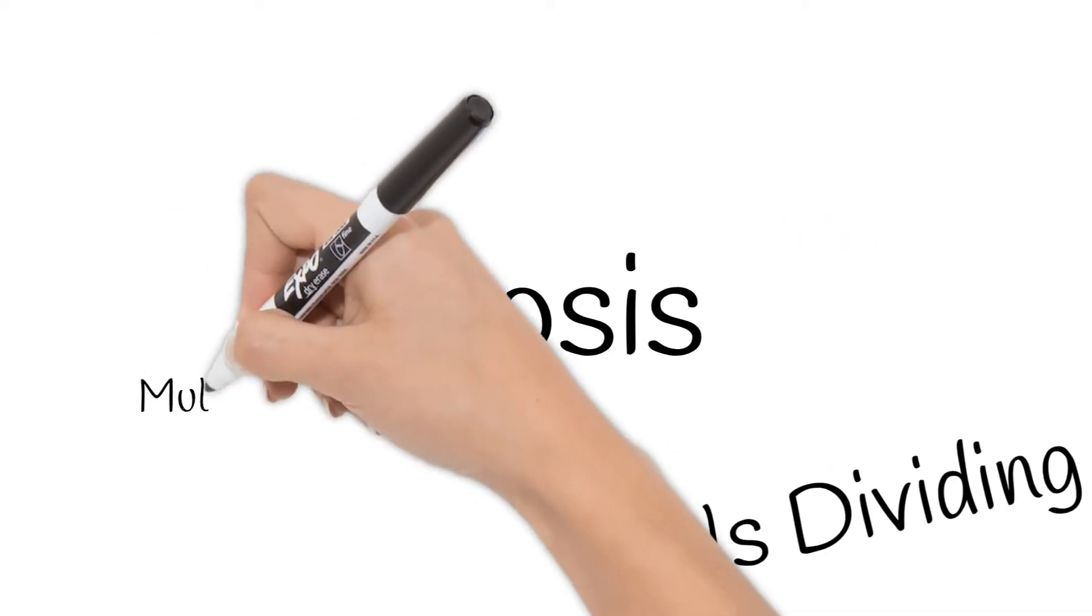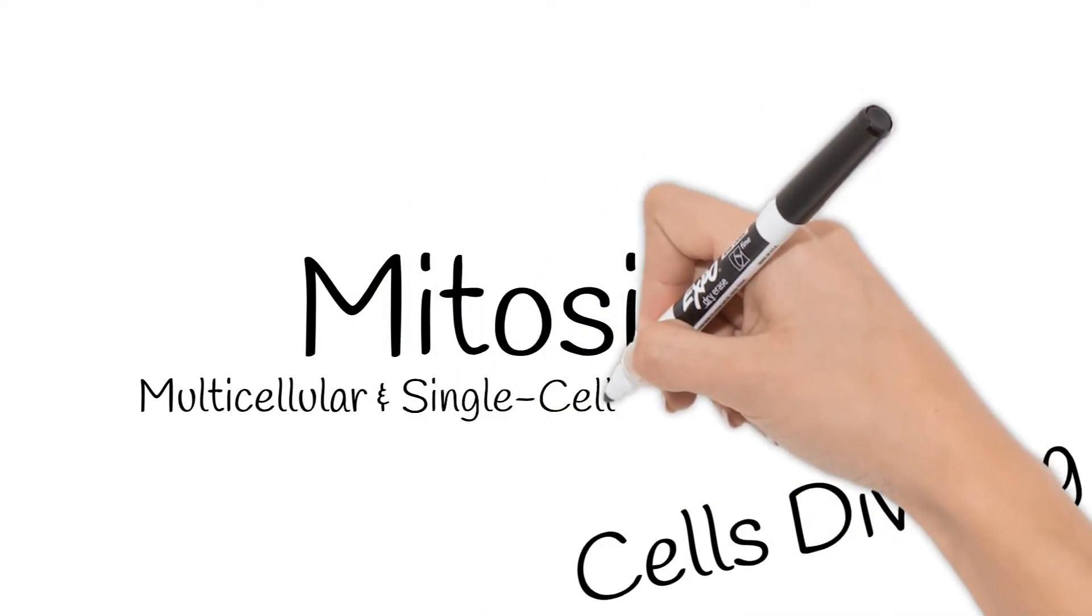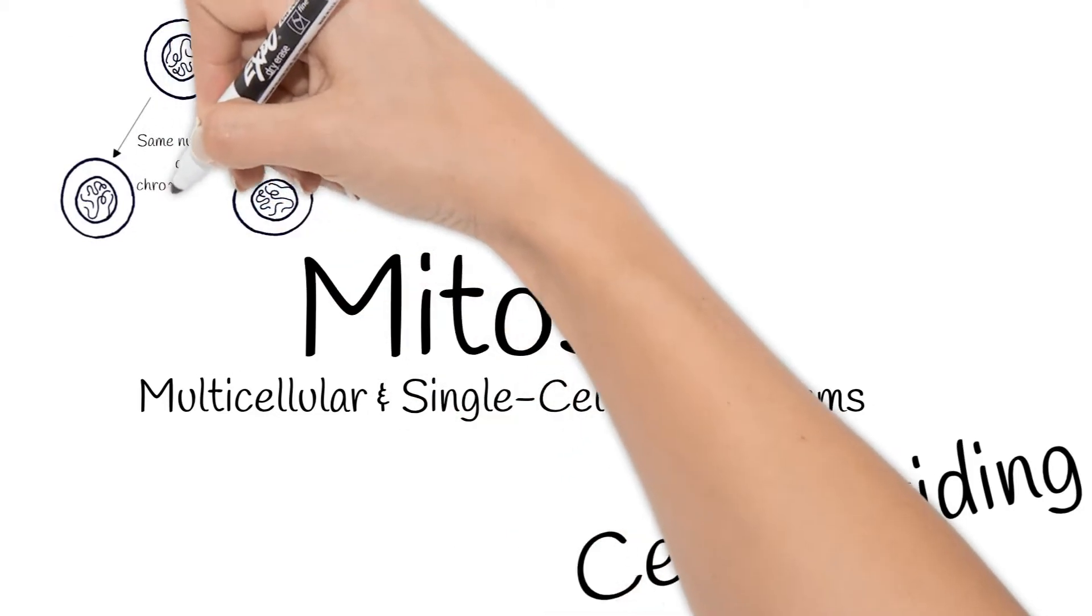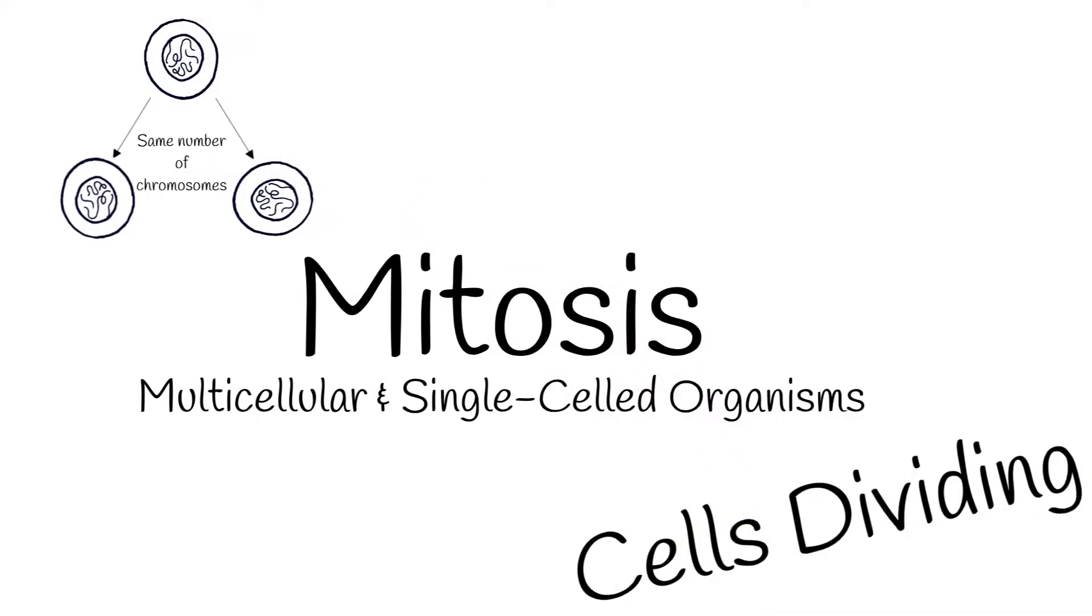Organisms that are multicellular, as well as single-celled organisms, undergo mitosis. Mitosis is when a cell divides to create two new cells. The new cells get the exact same number of chromosomes as the original cell.